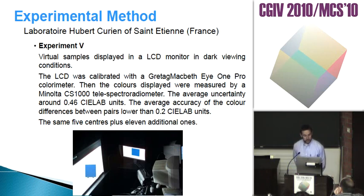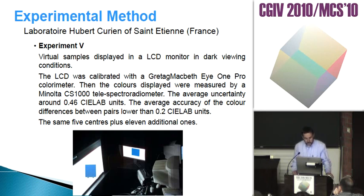In Experiment B, virtual samples were displayed on an LCD monitor under dark viewing conditions. The size of the patches displayed was identical to the size of the real samples. The LCD was calibrated with a Gretag-Macbeth i1 Pro colorimeter and the displayed colors were measured by a Minolta telespectroradiometer. The average uncertainty was around 0.46 CIELAB units and the average accuracy of the color differences between pairs was lower than 0.2 CIELAB units, so the relative accuracy of the LCD screen did not significantly affect observer judgments.